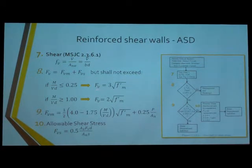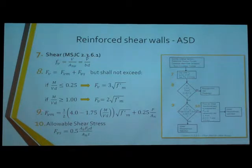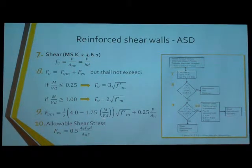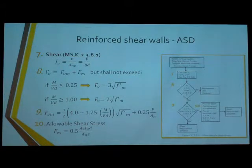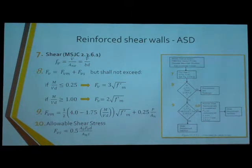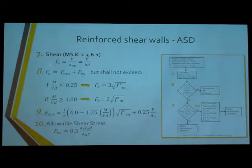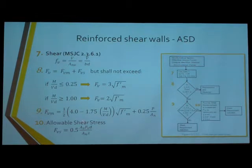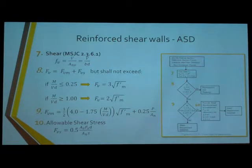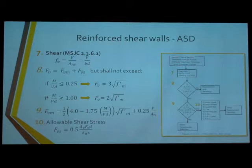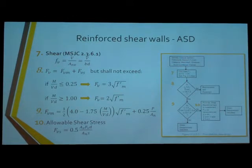For the different components, you have shear in the masonry and shear from the steel. From the masonry, you use this equation, and if the M/(V·d) ratio is greater than one, you use just 1.0 in the formula — don't use a higher number. If the sum of masonry and steel shear capacities is greater than your calculated shear, you're good. If not, come back and calculate your allowable shear stress. It's an iterative process — pick spacing and bar size to make sure it works.